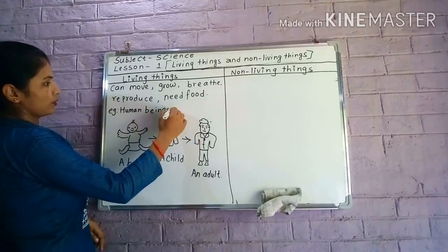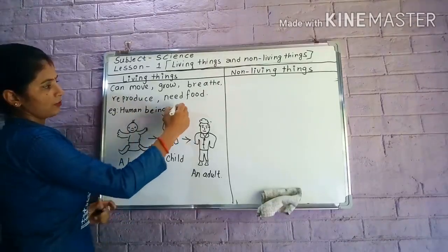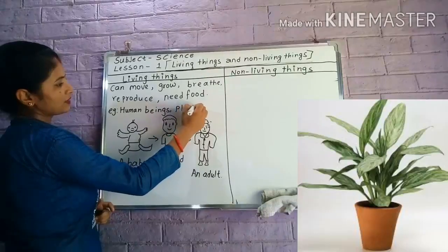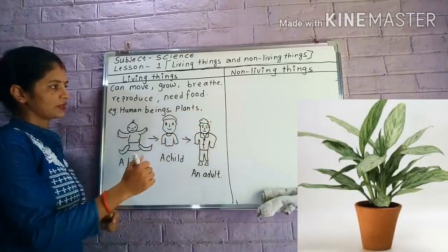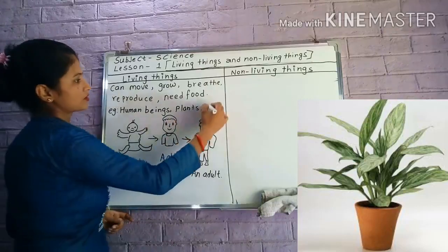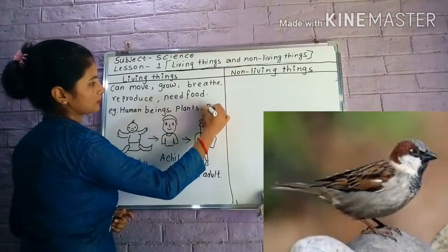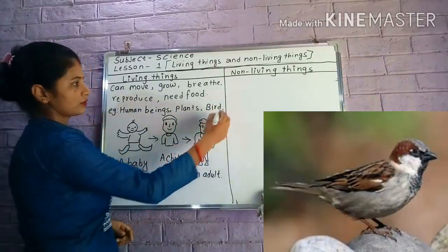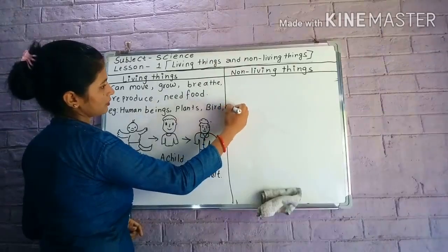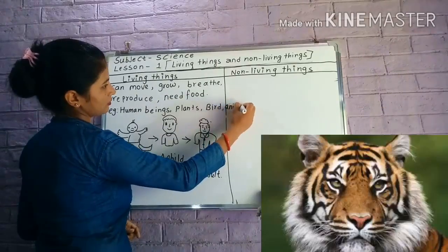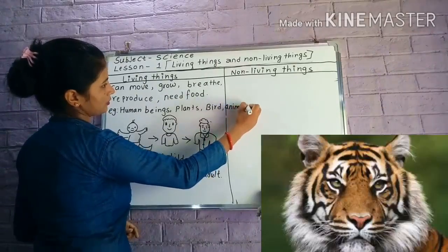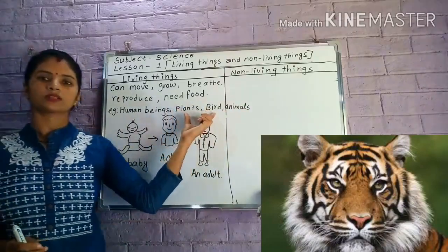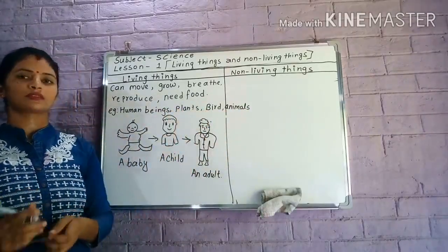Here I will write some examples of living things. Number one: human beings. Number two: plants — plants also are living things. And birds. And animals. These are the examples of living things.